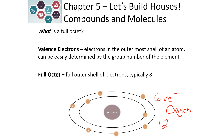The way that oxygen does this is it either shares or steals electrons. If it shares, that would be a covalent bond. If it steals, that would be an ionic bond.